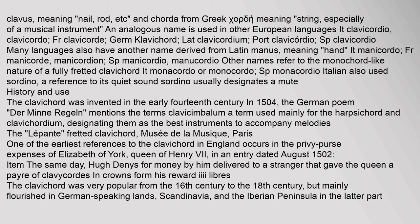The clavichord was invented in the early 14th century. In 1504, the German poem Der Min Regeln mentions the terms clavisimbalum — a term used mainly for the harpsichord — and clavichordium, designating them as the best instruments to accompany melodies. One of the earliest references to the clavichord in England occurs in the privy purse expenses of Elizabeth of York, Queen of Henry VII, in an entry dated August 1502: 'Hugh Dennis for money by him delivered to a stranger that gave the Queen a pair of clavichords.'